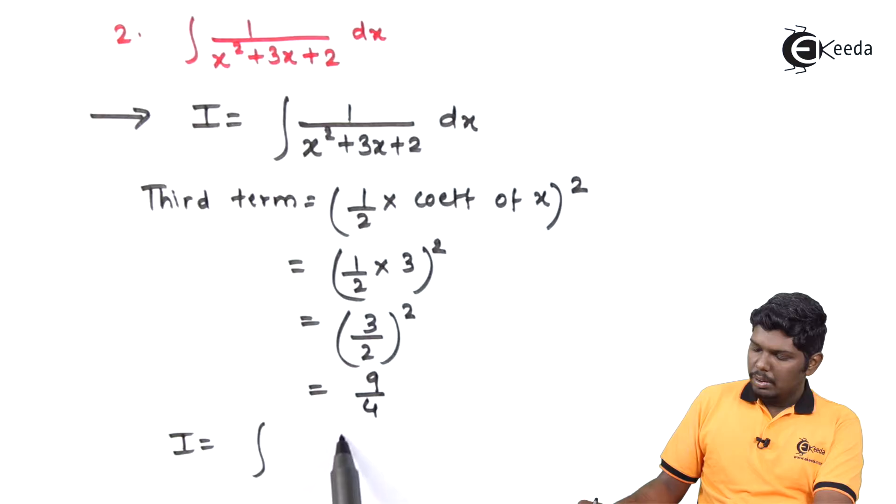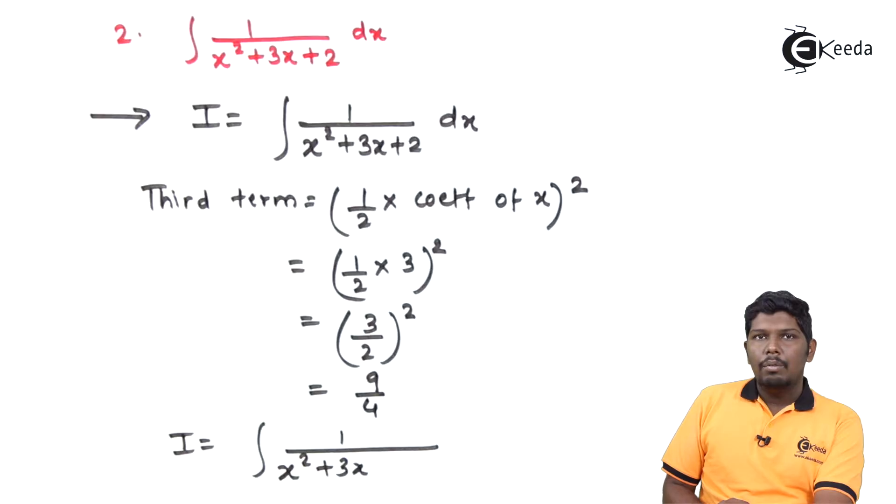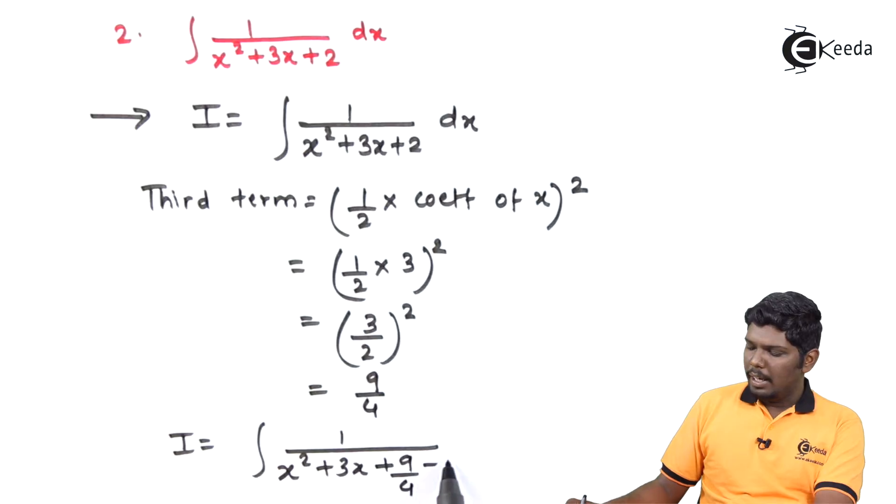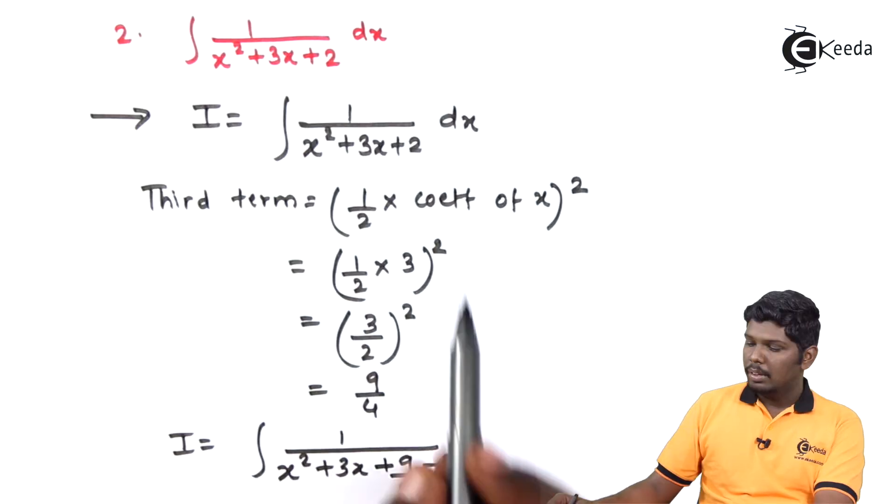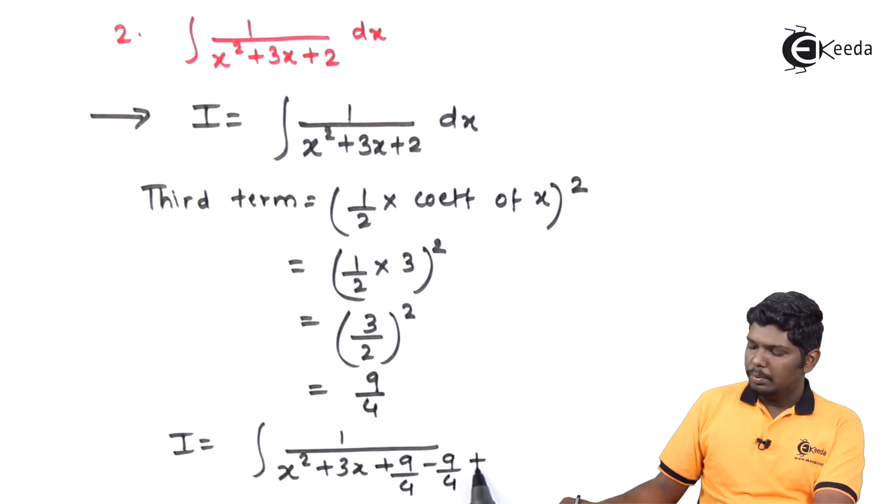I is equal to integral 1 upon x² plus 3x. After the x term we will check whether to write first plus 9 by 4 or minus 9 by 4. For that we need to check the sign of x². Here x² is positive. Therefore we will first write plus 9 by 4, and to balance it we will further write minus 9 by 4, followed by plus 2 dx.